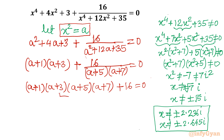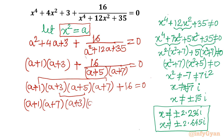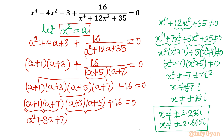Now I'll group the brackets strategically. Notice that 3 + 5 = 8 and 7 + 1 = 8, so I'll pair (a + 1)(a + 7) and (a + 3)(a + 5). Expanding: (a + 1)(a + 7) = a² + 8a + 7, and (a + 3)(a + 5) = a² + 8a + 15. Both share the core a² + 8a.